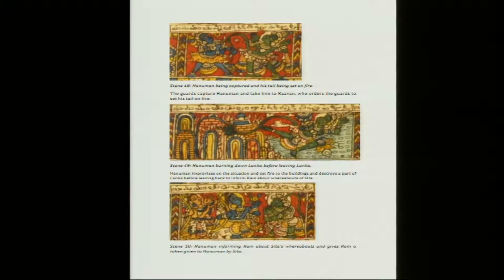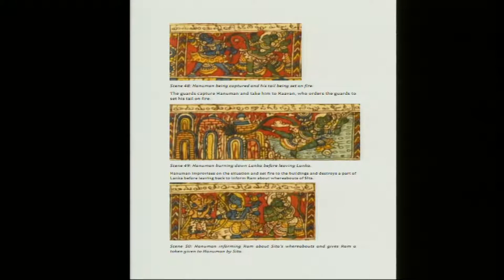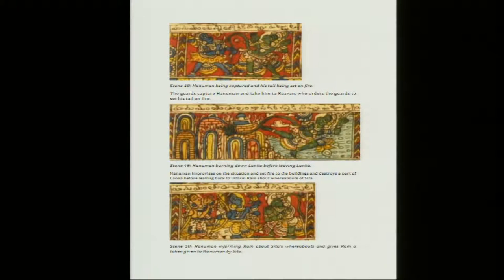Hanuman burns down Lanka before leaving. What we see in the picture is the city — the architectural structures are not very angular but very organic in their shape. Apart from the separator with horizontal vertical lines and grids, there is hardly any angularity in the line, although there is a bit of foreshortening shown in Hanuman's body. Hanuman is handling the situation — he set fire to the buildings and destroyed a part of Lanka before leaving to inform Ram about the whereabouts of Sita.